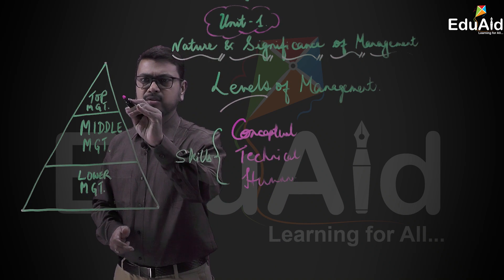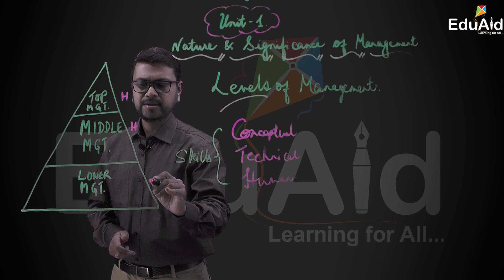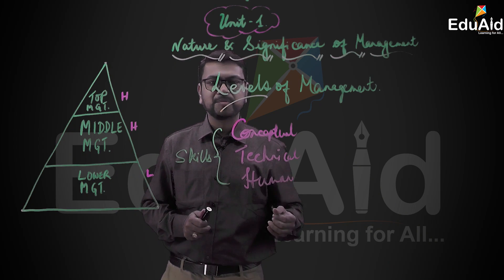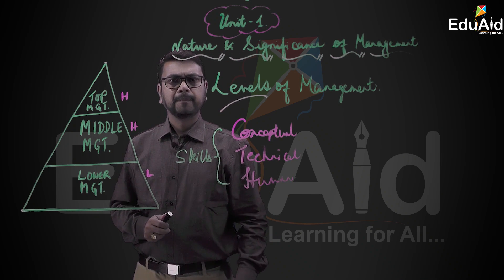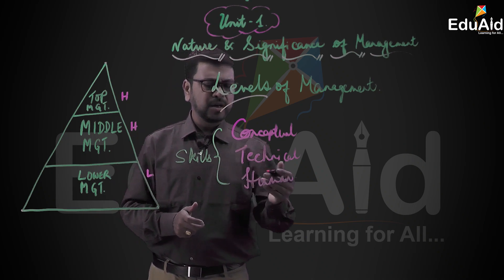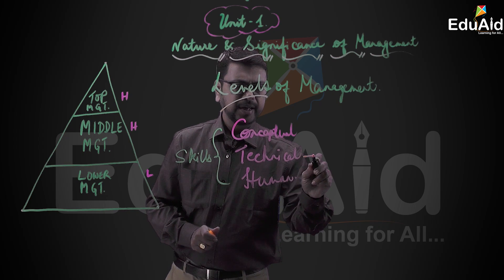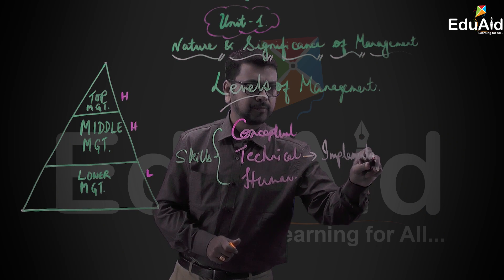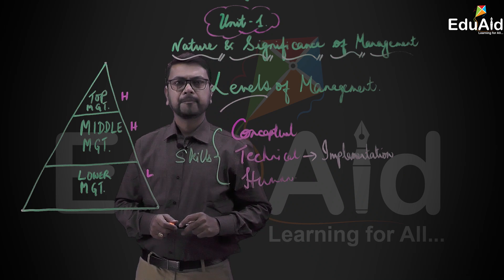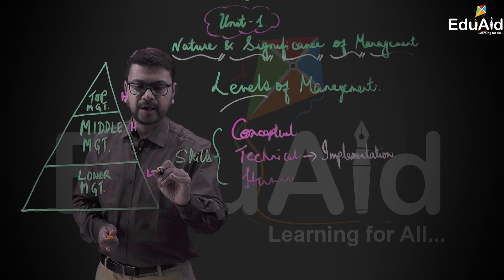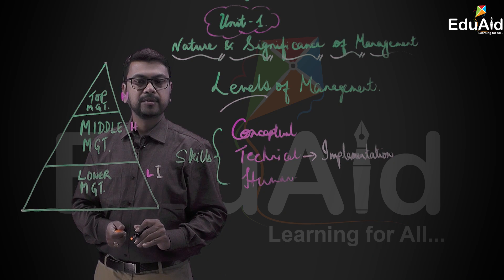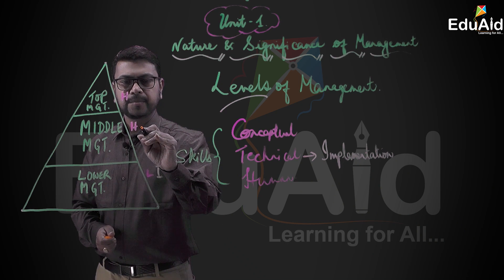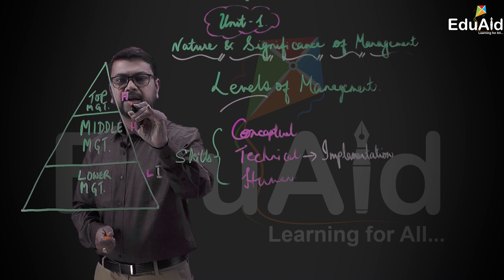Human skills — dealing with people — is common across top, middle, and lower level. Technical skills are more about implementation of work. Implementation is more done at the lowest level, slightly less in the middle level, and even lesser at the top level.